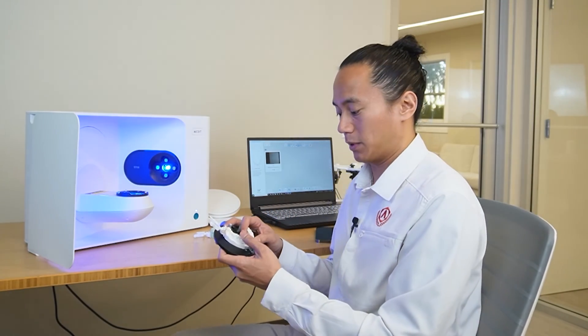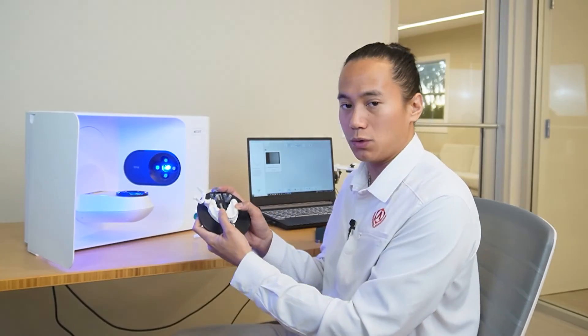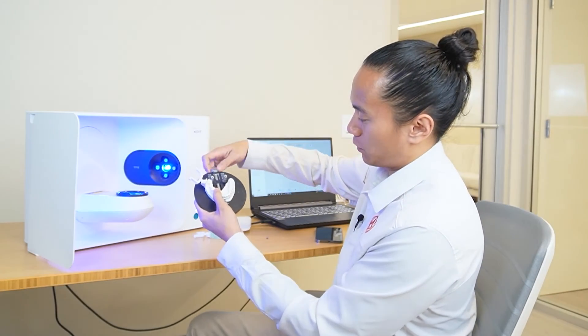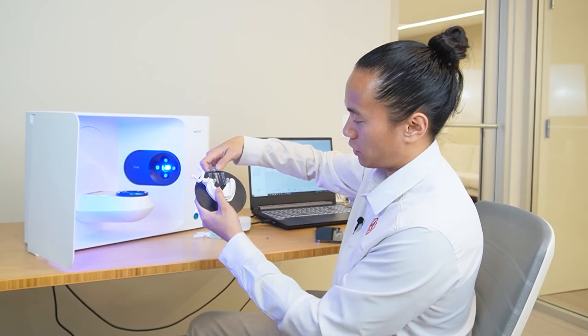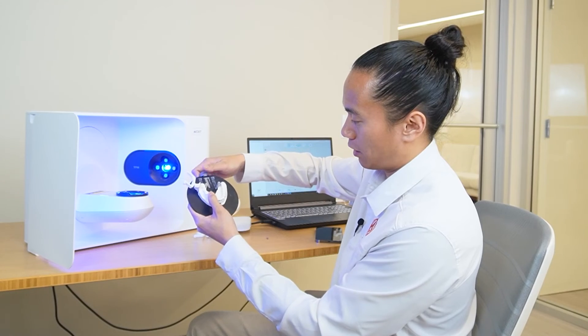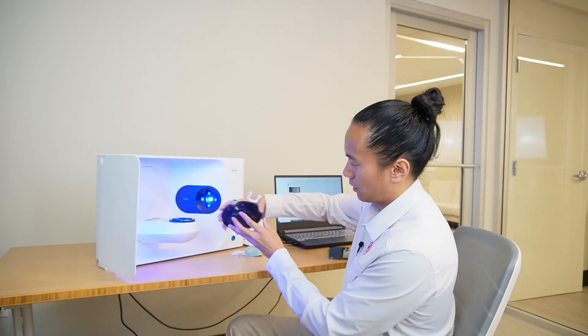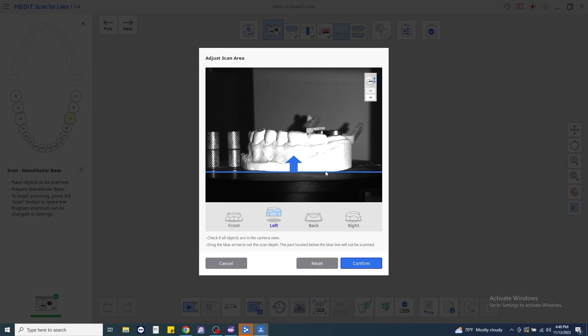The last step in scanning our implant case will be scanning our opposing scan. Again, we're still going to be using the full arch clamping stage here and we're just going to tighten it and make sure that we apply even pressure all the way across our model. It's not going to move during the scanning process. Place that gently into our scanner, confirm our brightness, and start our scan. Again, confirm the model height.